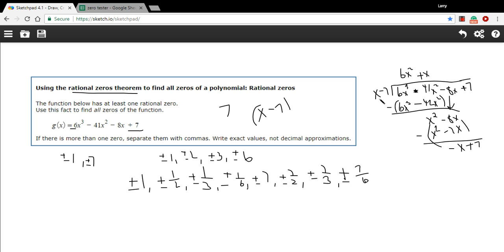And what do we need to multiply X by to get negative X? That would be a negative 1. So negative 1 times X. Negative X. Negative 1 times a negative 7 is plus 7. And this just, when we subtract it, this all just goes away. We have a remainder of 0, which we should if X minus 7 really is a factor. It should give us a remainder of 0. Now what we have is this quadratic.